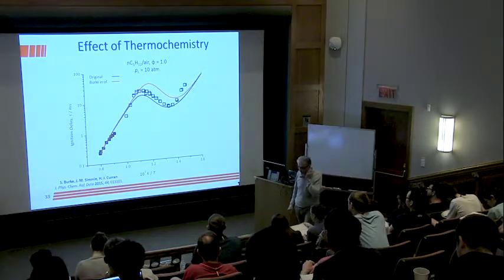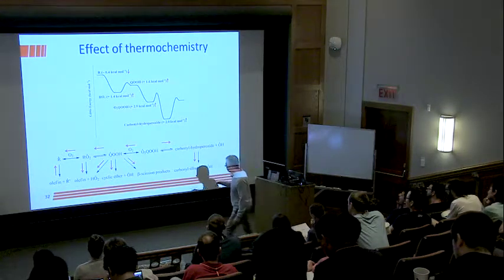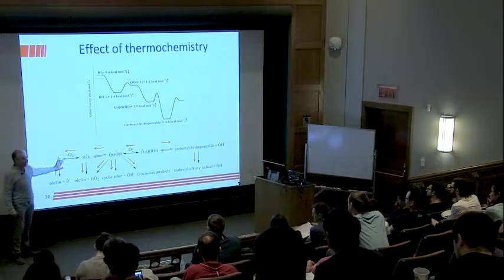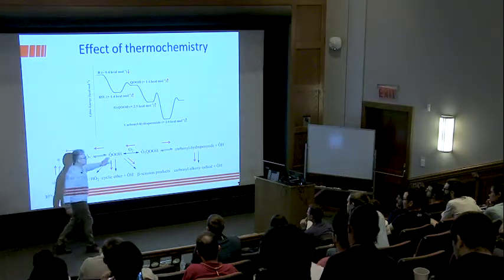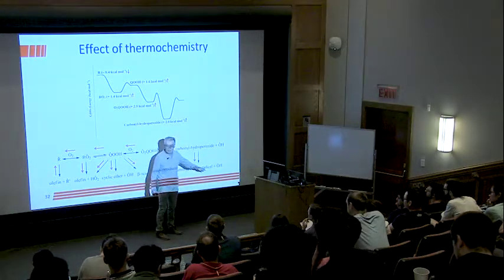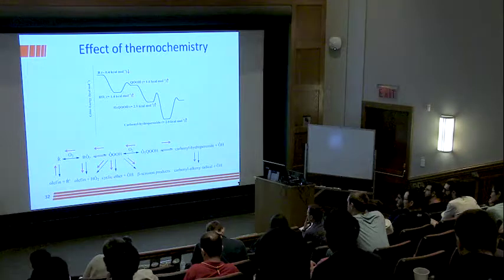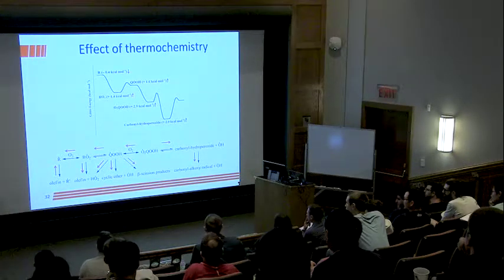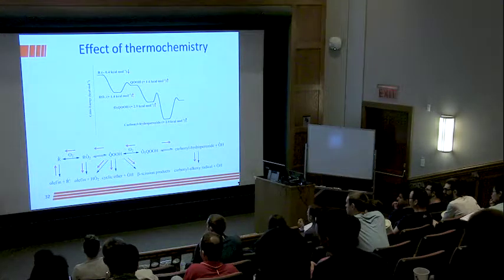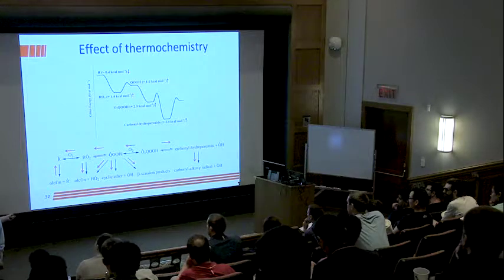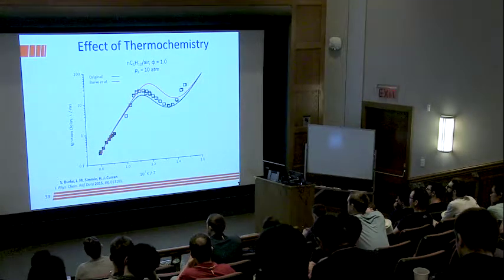If we want reactivity at low temperature, we want the system to go down to the carbonyl alkoxy radical plus OH, to chain branching. To do that, the faster the rate of alkyl radical addition to molecular oxygen, the faster the rate of RO2 isomerization to QOOH. The higher the rate of RO2 to QOOH isomerizations, that will increase things. So the thermochemistry is decreasing reactivity.